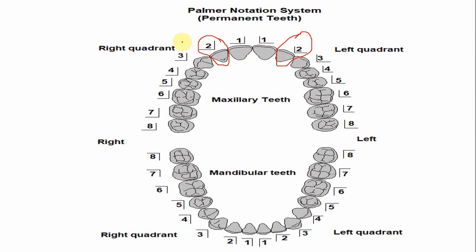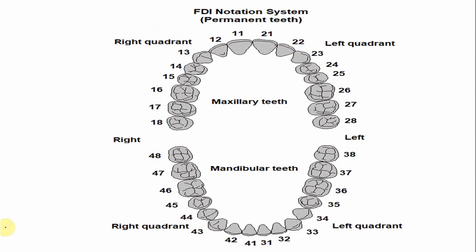In the Palmer notation system, the right and left maxillary lateral incisors are both numbered two but differentiated using a symbol — one symbol indicates the right quadrant and the other indicates the left quadrant. In the FDI notation system, this tooth is designated as 1-2 for the right lateral incisor and 2-2 for the left lateral incisor.